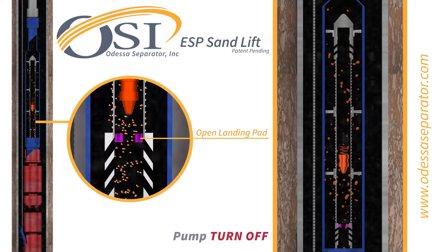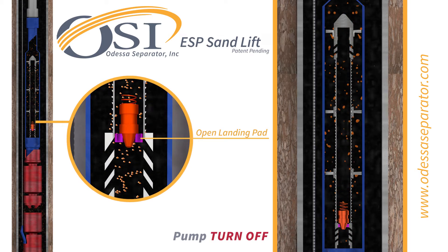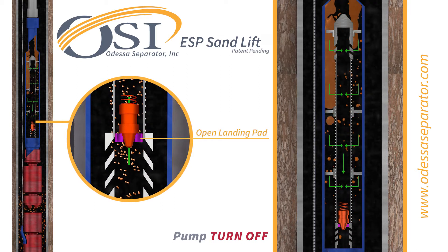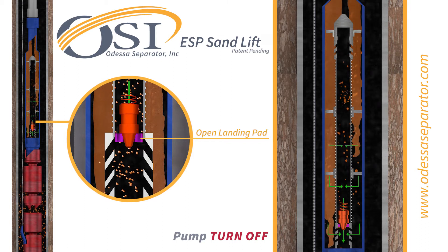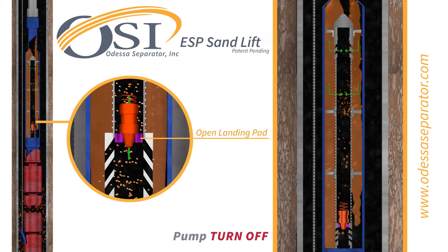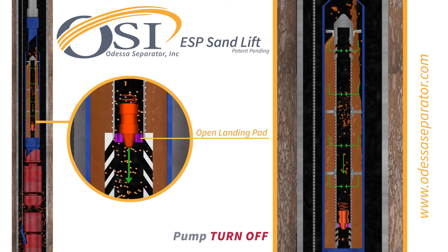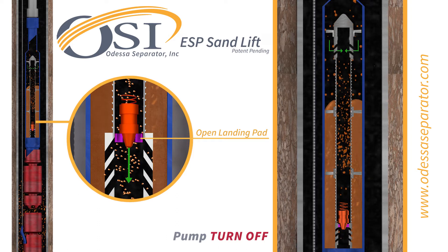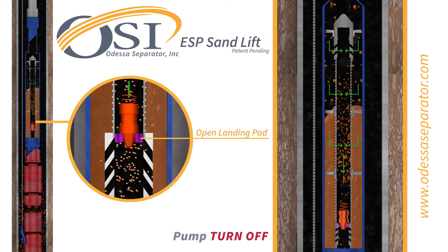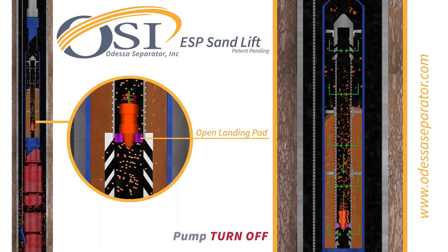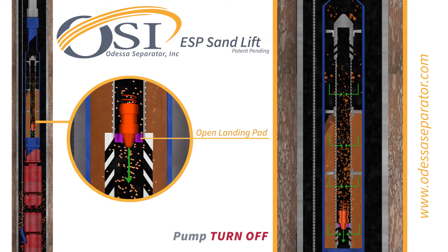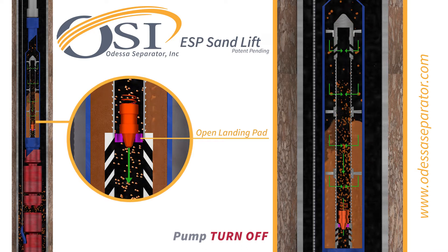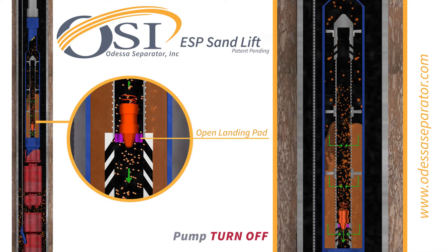When the pump is turned off, the dart sandbreaker falls back to the open landing pad. Fluid and in-train solids begin to flow back through the tubular ports following the same path. The dart sandbreaker and tubular ports regulate the rate of sand that comes back through the pump.